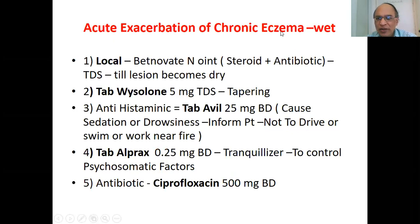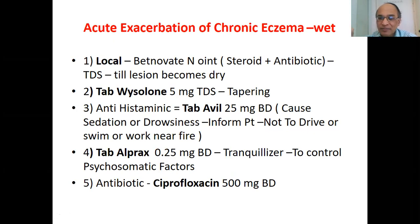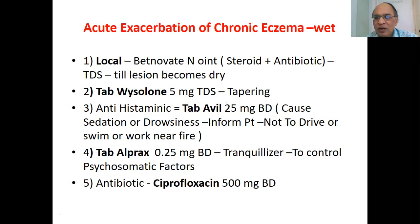For acute exacerbation of chronic eczema — wet eczema — apply locally Betnovate-N ointment, which is neomycin plus steroid, TDS until the lesion becomes dry. Internally, prednisolone 5 mg TDS, which should be tapered — from TDS to BD to OD over seven to ten days. Tapering is very important when using steroids.